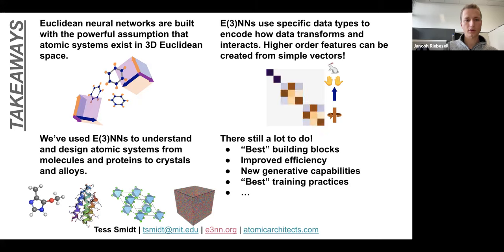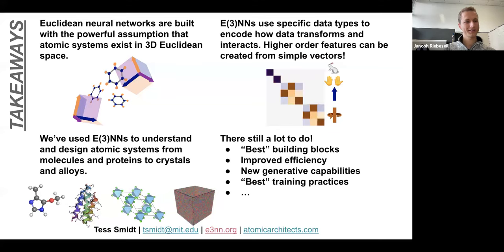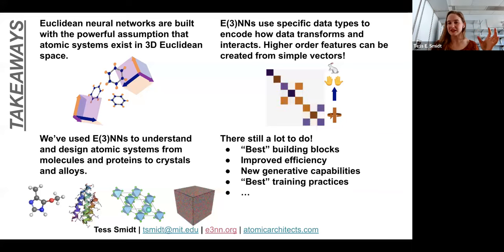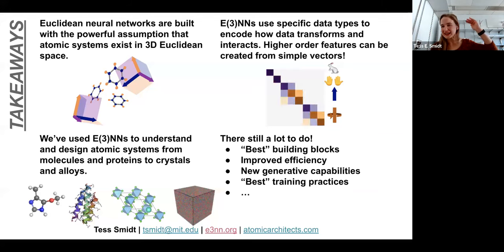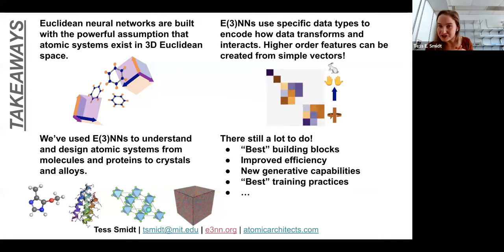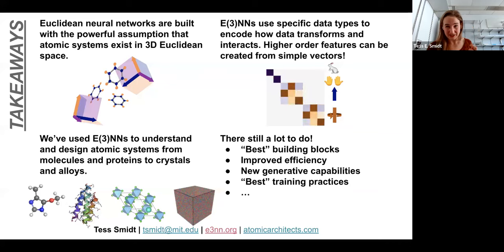Another question: How about systems without symmetry? Can E3NN learn structural motifs in amorphous materials? Absolutely — because it's the symmetry of the underlying patterns you want to learn, not the symmetry of the object. If you put in a low-symmetry object, the output can have the same low symmetry. I actually think E3NNs would be particularly good for glasses, because of the continuous features over spherical harmonics — recognizing distortions of similar motifs should be something the model excels at.